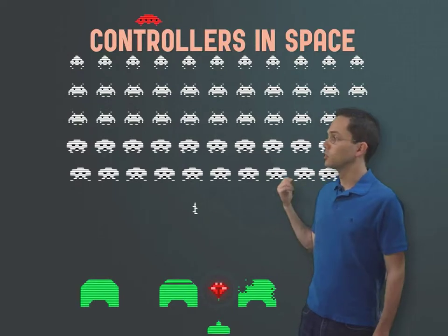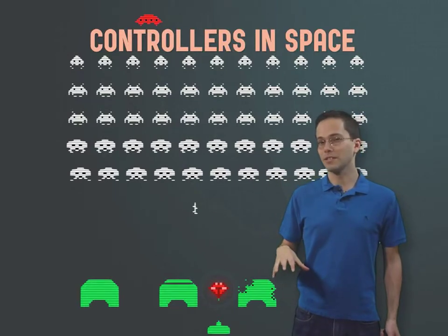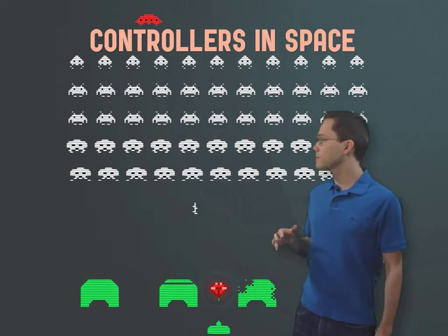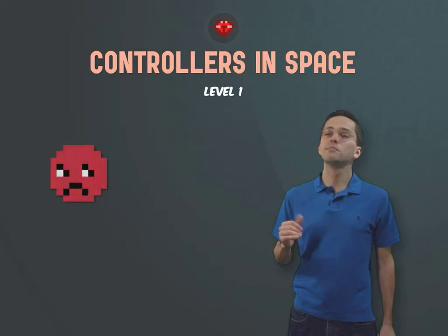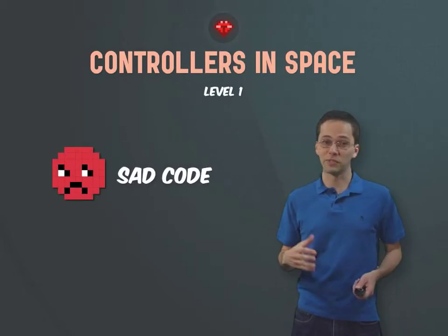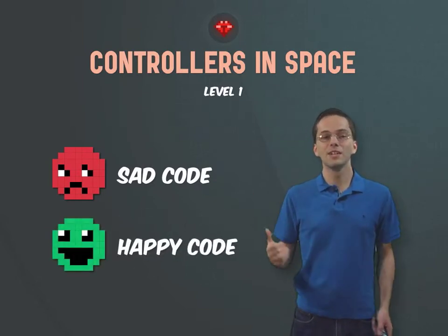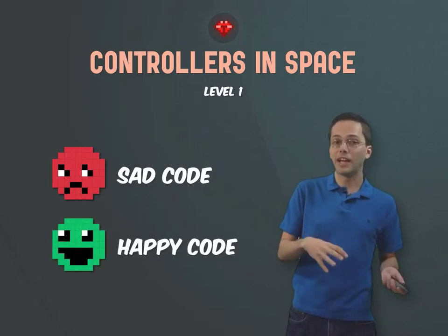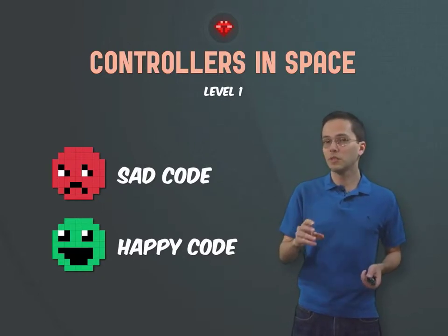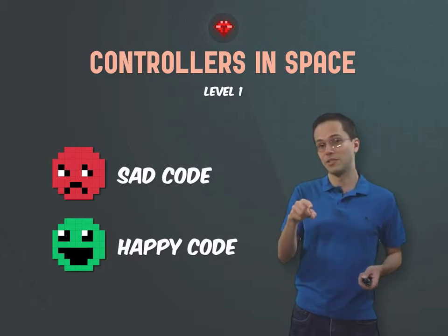Level 1 is entitled Controllers in Space, so we're going to be going through and doing some controller best practices. As we go through, you're going to notice sometimes we use sad smiley faces to signify that we have some bad code that needs to be refactored. And sometimes we'll be having happy smiley faces, which will show you that this code has been refactored and it is a best practice. This should be useful when you go back and reference the slides later to figure out which is the sad code and which is the happy code.